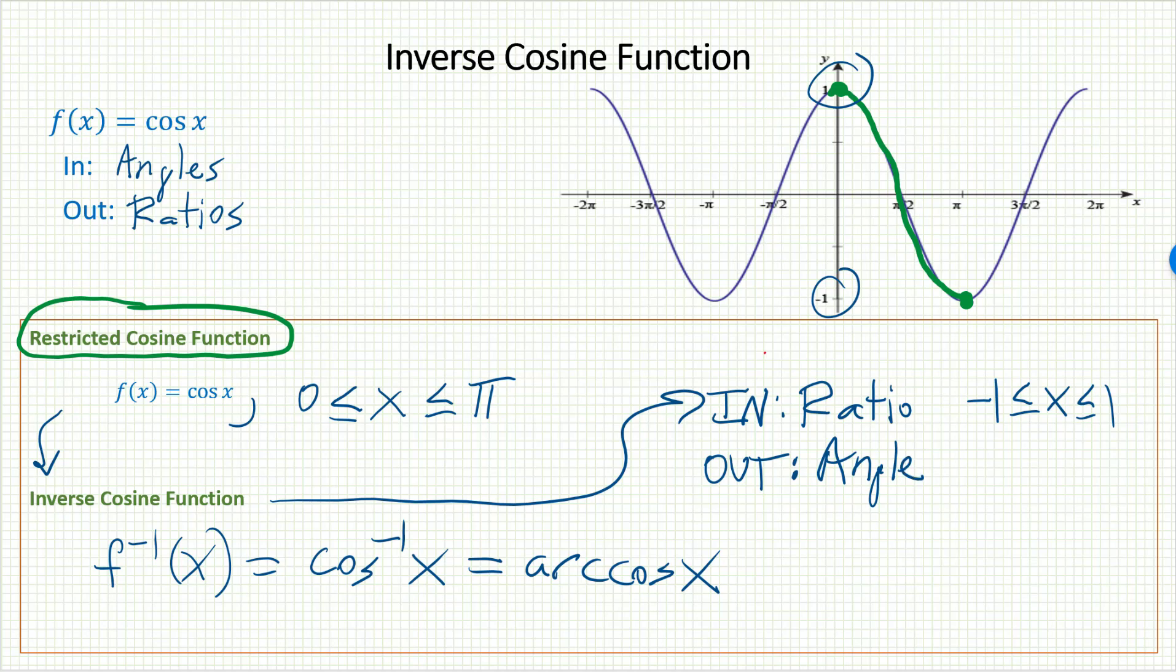And it sends out angles. But not any angle. The only angles that this function has ever heard of are angles between 0 and π. Once again, this information is very important to learn and memorize in order to make sense of the inverse cosine function.